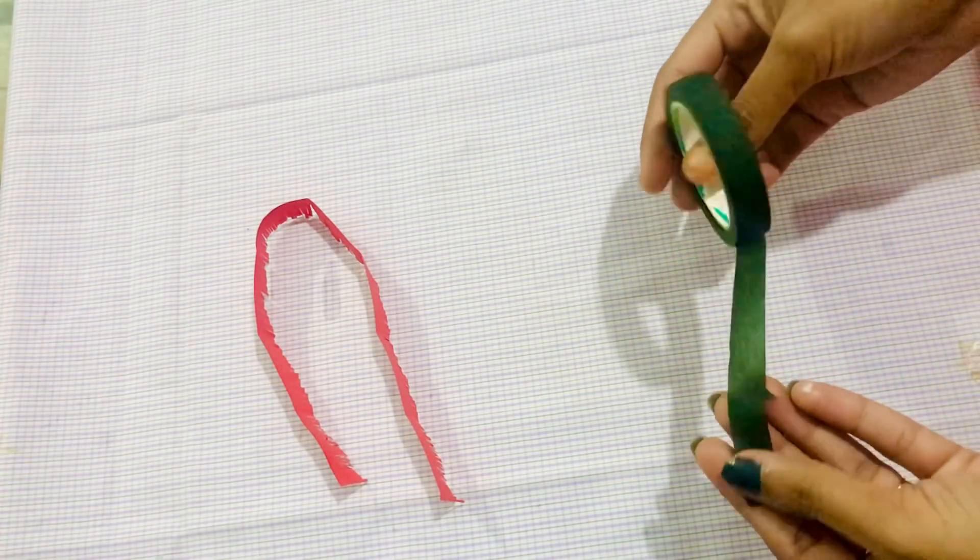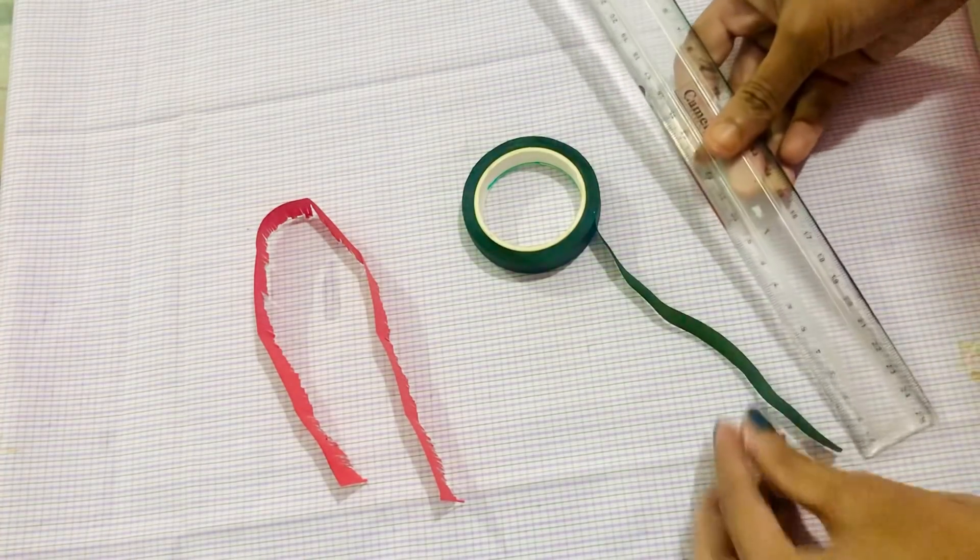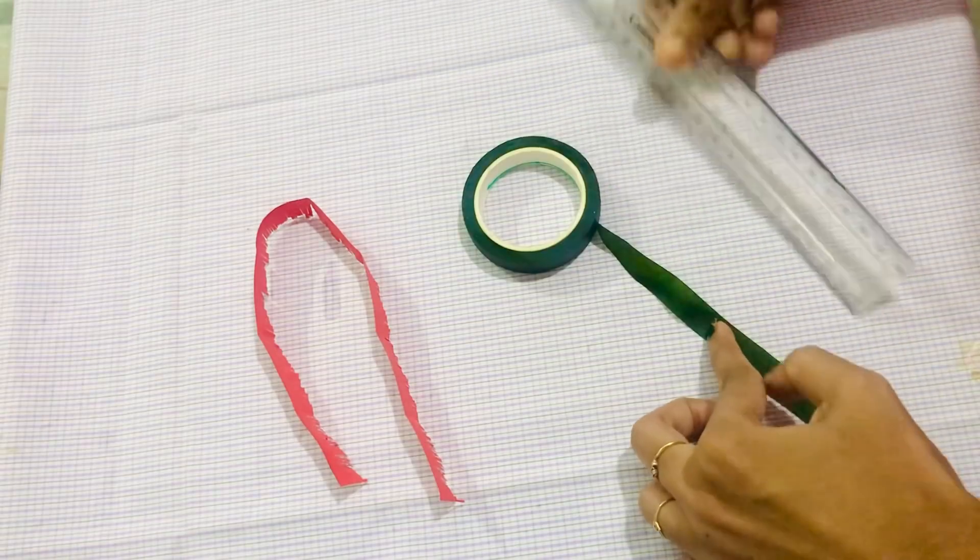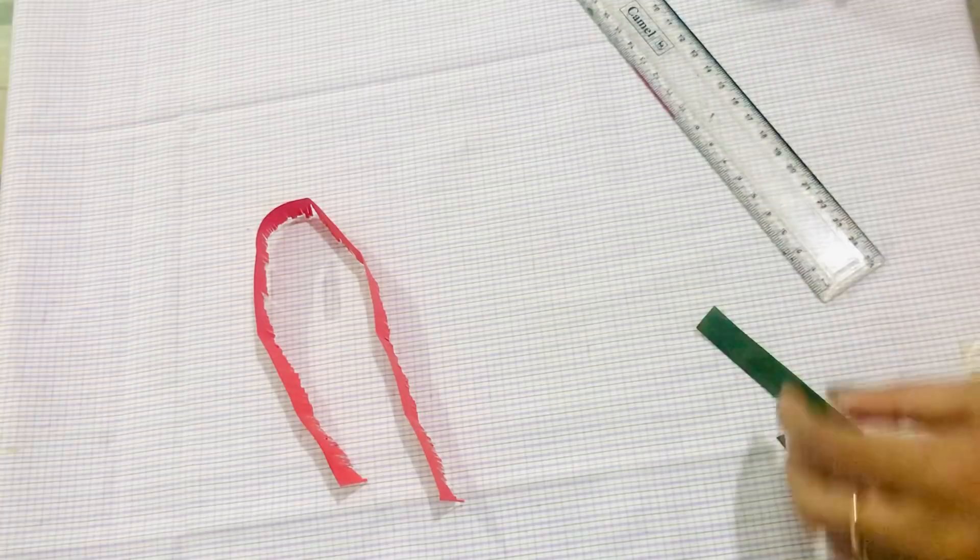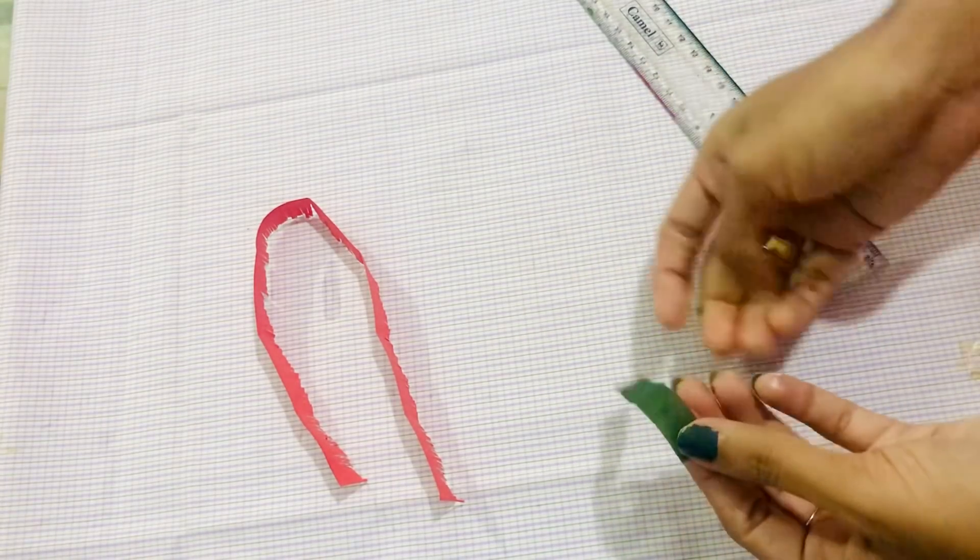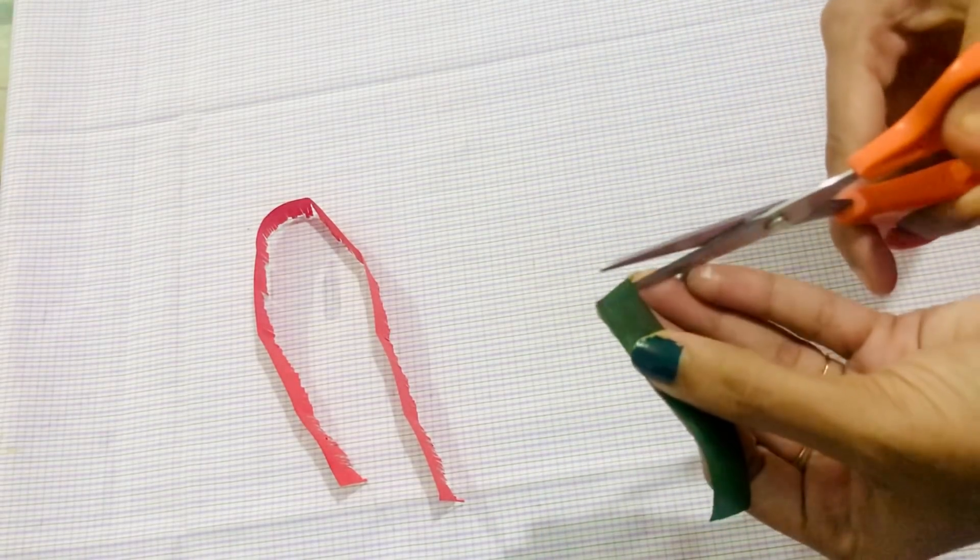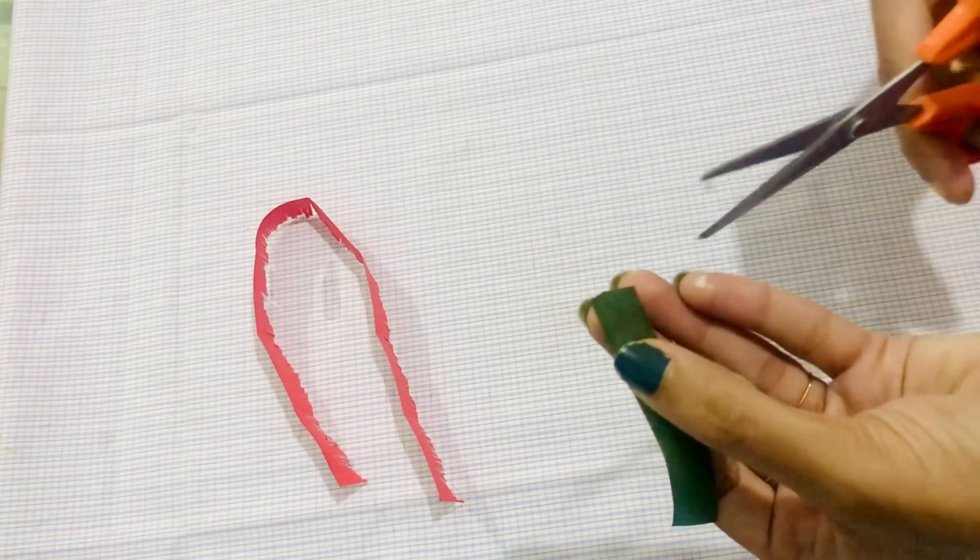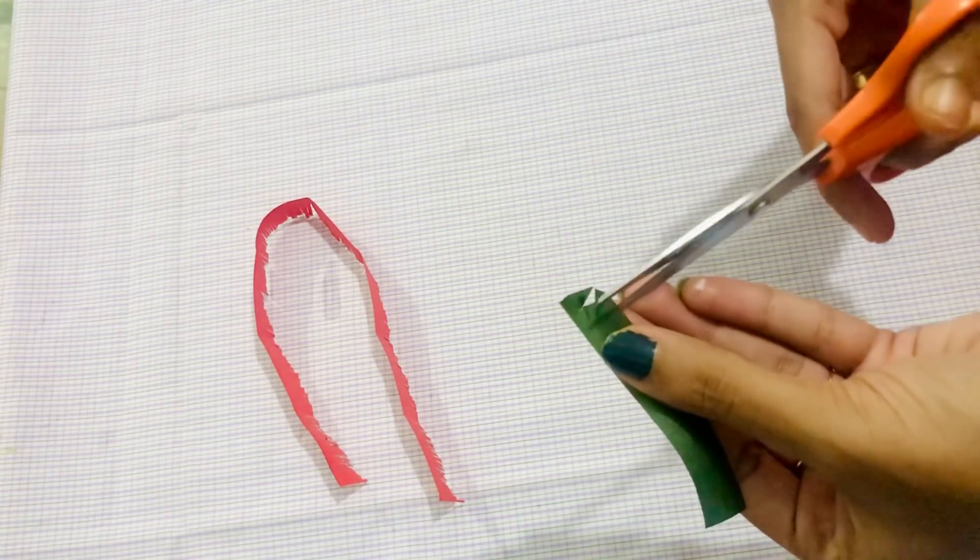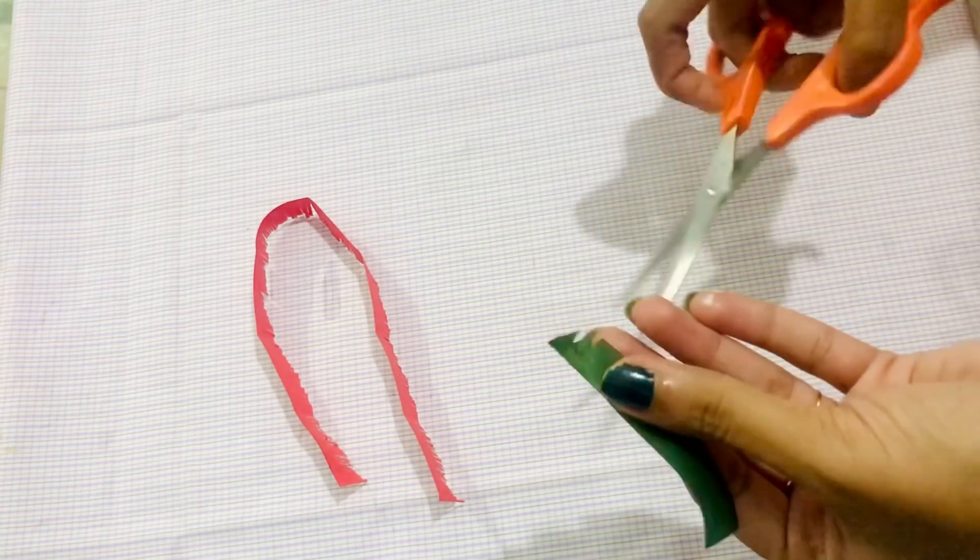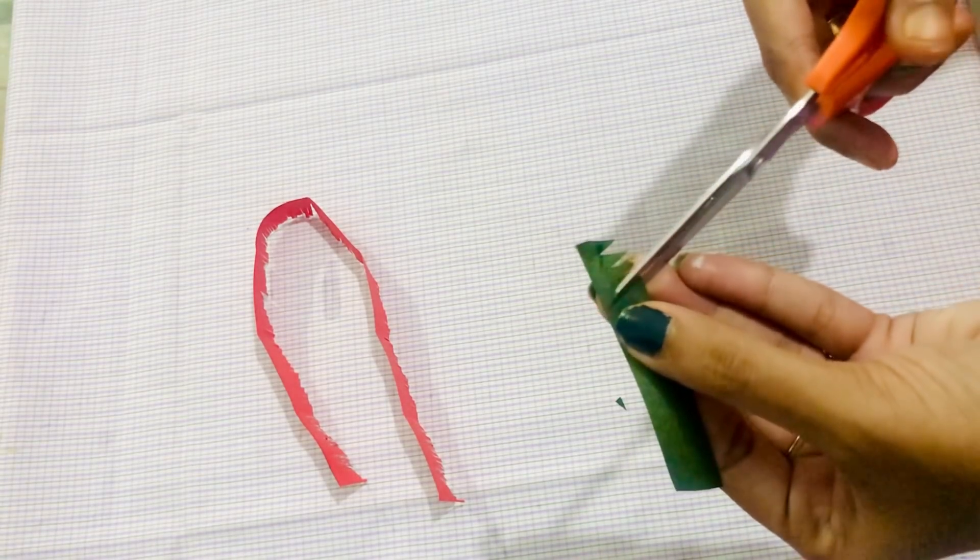This is the green tape. I am going to cut the tape. Now you can use green paper. You can use this type of paper.